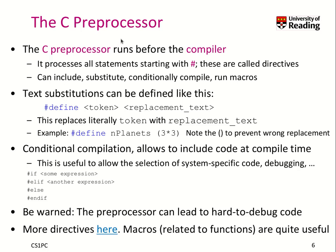Let's get started with the C preprocessor. The C preprocessor runs before the actual compiler runs and it processes all statements starting with the hash. Those statements are called directives. It can include additional text files, it can substitute text, it can conditionally compile, and it can create and run macros.